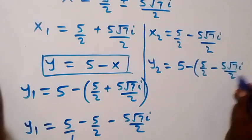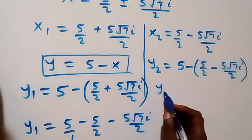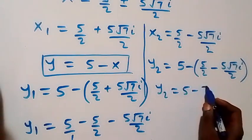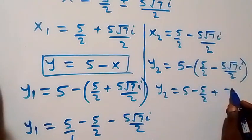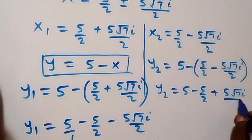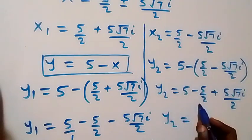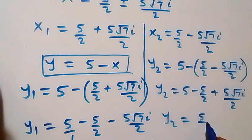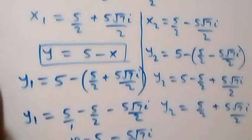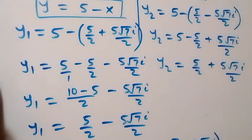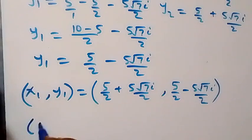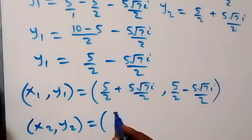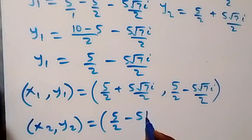Opening the bracket for y₂: y₂ equals five minus five over two plus five root seven i over two, which gives y₂ equals five over two plus five root seven i over two. The second set of solutions is: x₂ equals five over two minus five root seven i over two, and y₂ equals five over two plus five root seven i over two.